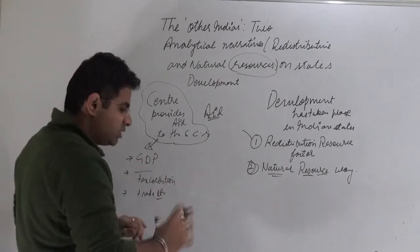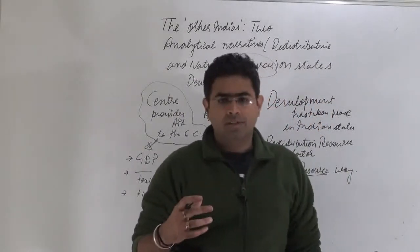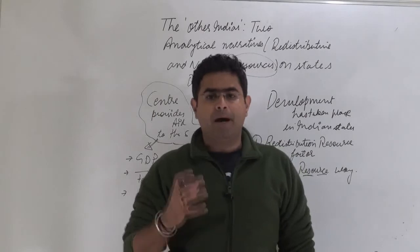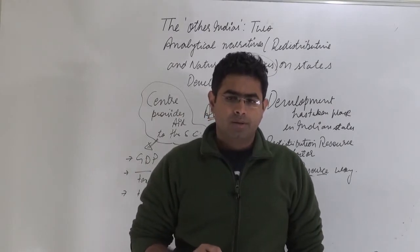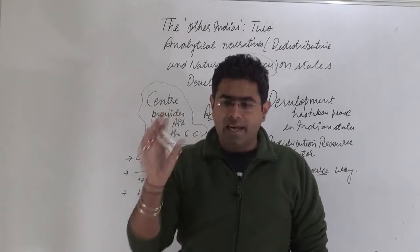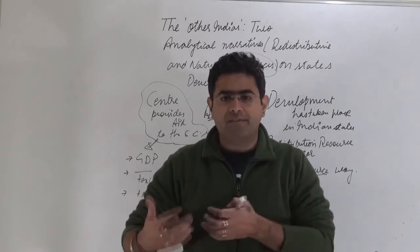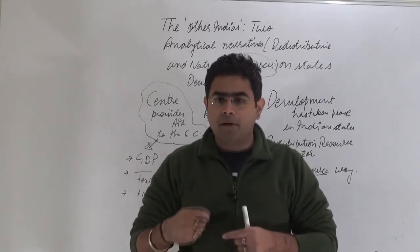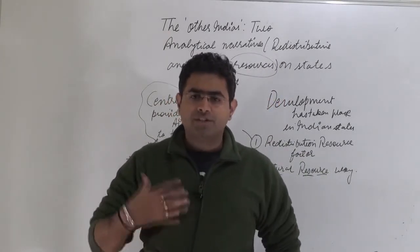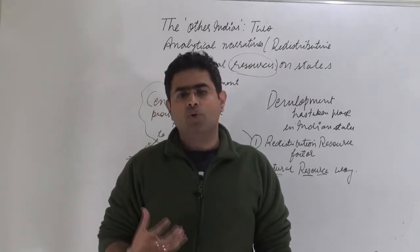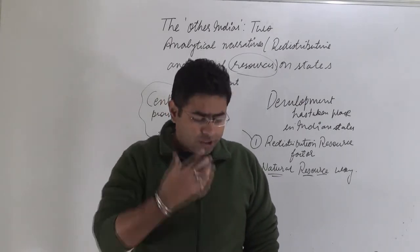According to this chapter of the Economic Survey, the aid provided by the center to the states has not yielded much result. This chapter has analyzed 10 states which were getting the bigger share of aid from the center, but they have not been able to use this aid effectively.